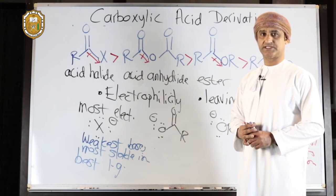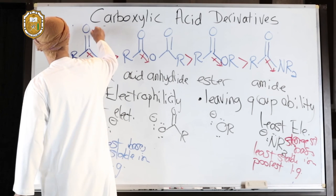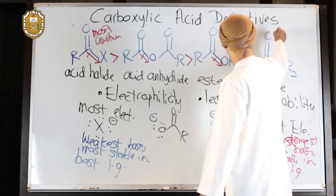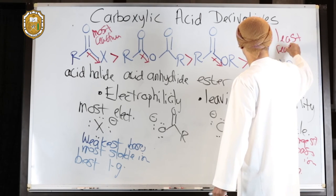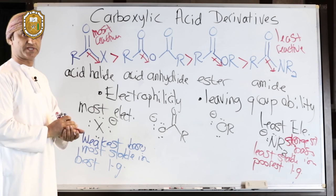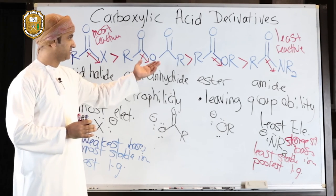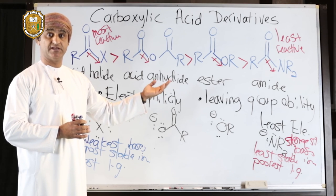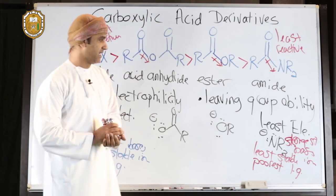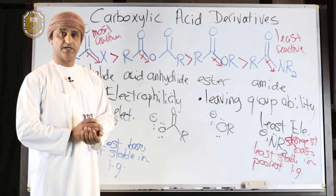As a result, acid halides are the most reactive in nucleophilic acyl substitution reactions because they are the most electrophilic and contain the best leaving group. Amides are the least reactive. The reactivity scale is: acid halides > acid anhydrides > esters > amides. Amides are least reactive because the carbonyl carbon is the least electrophilic and amide ions are the worst leaving groups. More details on each will follow shortly.